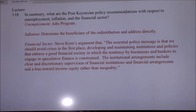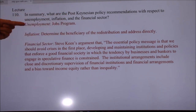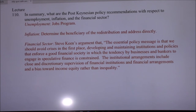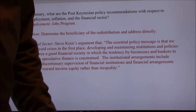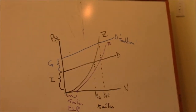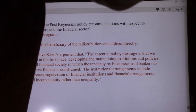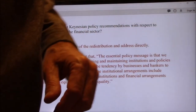So what are the post-Keynesian policy recommendations? You have three things to mention: unemployment, inflation, and the financial sector. Unemployment is the jobs program — it's the employer of last resort. That's what they say you ought to do about that. You ought to be trying to shift the Z-curve and not the D-curve, and directly affect the unemployment and reach those who are most hurt.